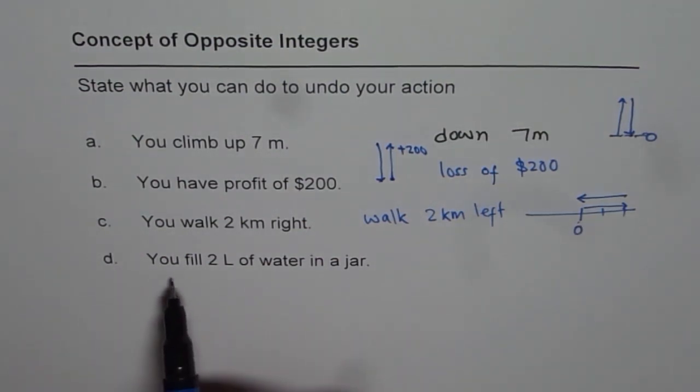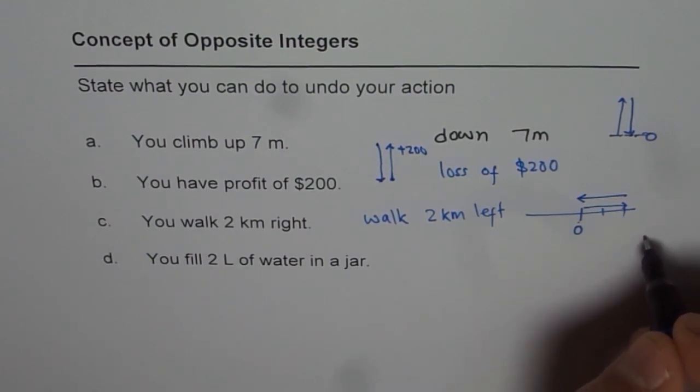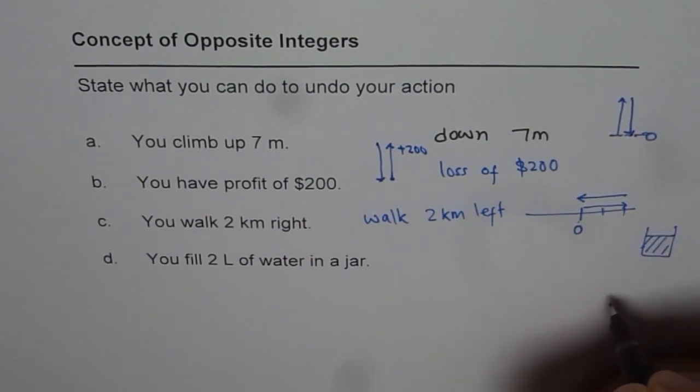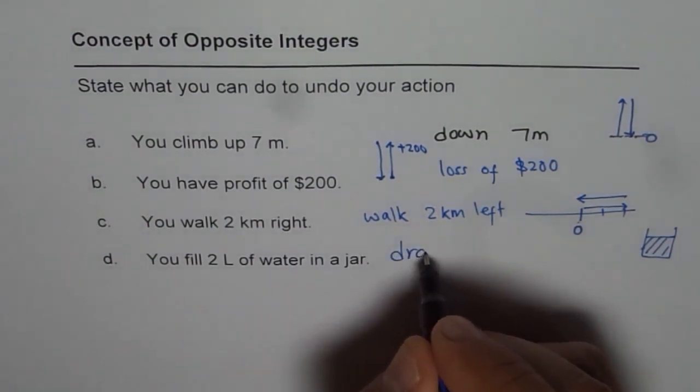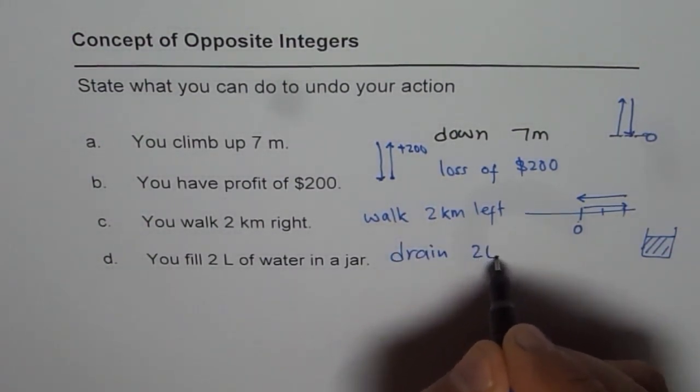Now the last one is, you fill 2 liters of water in a jar. So let's say here we have a jar and you fill it with 2 liters of water. Now how should you undo it?